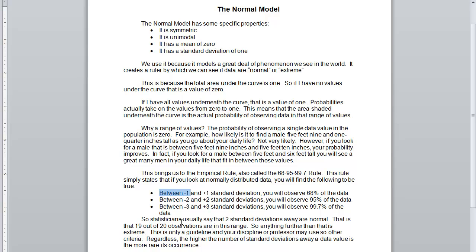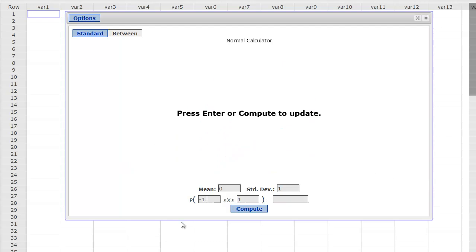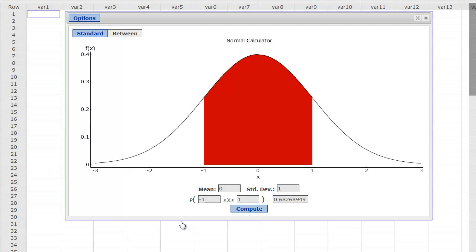Between negative 1 and positive 1 standard deviation, you will observe 68% of your data. If I go from negative 1 to positive 1, like we saw, you'll actually see that 68% of data is going to be in this particular range. It's from one inflection point to the other.